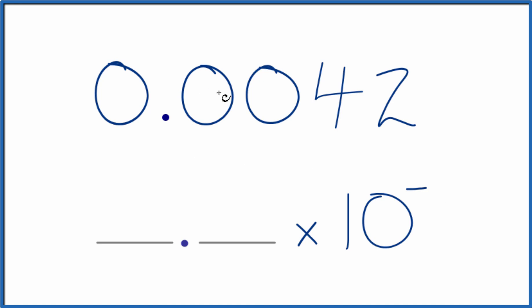So let's go and move the decimal point 1, 2, 3. And now we have our whole number. We moved it three places, so it's going to be 10 to the negative third.